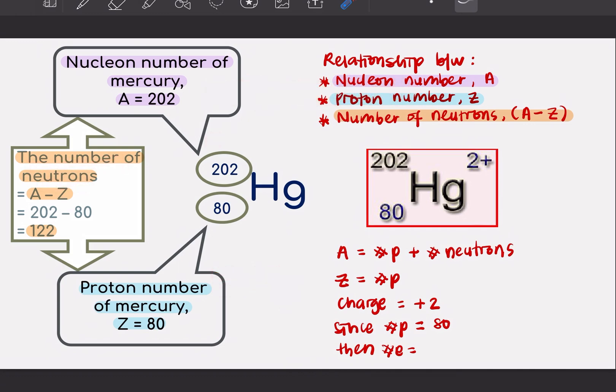One thing to remind you, please do not write neutron numbers. Write number of neutrons. So this is the way for you to find the number of neutrons: A minus Z. Simple kan? Ni saya dah tulis dah sini.